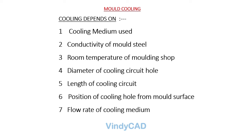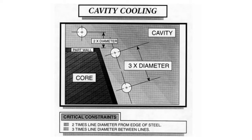Fourth is the diameter of the cooling hole, and fifth is the length of the cooling circuit. These two points are correlated to the flow rate of the cooling line. If your diameter is too large and your length is too high, the flow rate in LPM or GPM will vary. You must select the exact proportion of length and diameter. As explained in my top 10 mold maker skills video, a certain distance must be maintained from the cavity surface to the center of your hole — that distance should be 2 times your diameter, and the pitch between 2 holes should be 3 times the diameter.